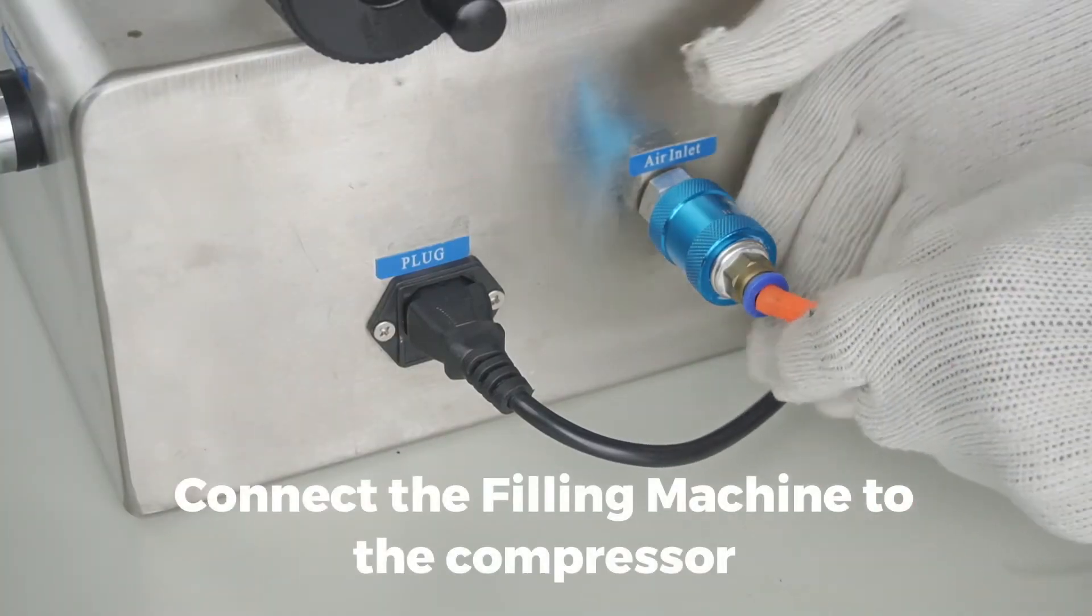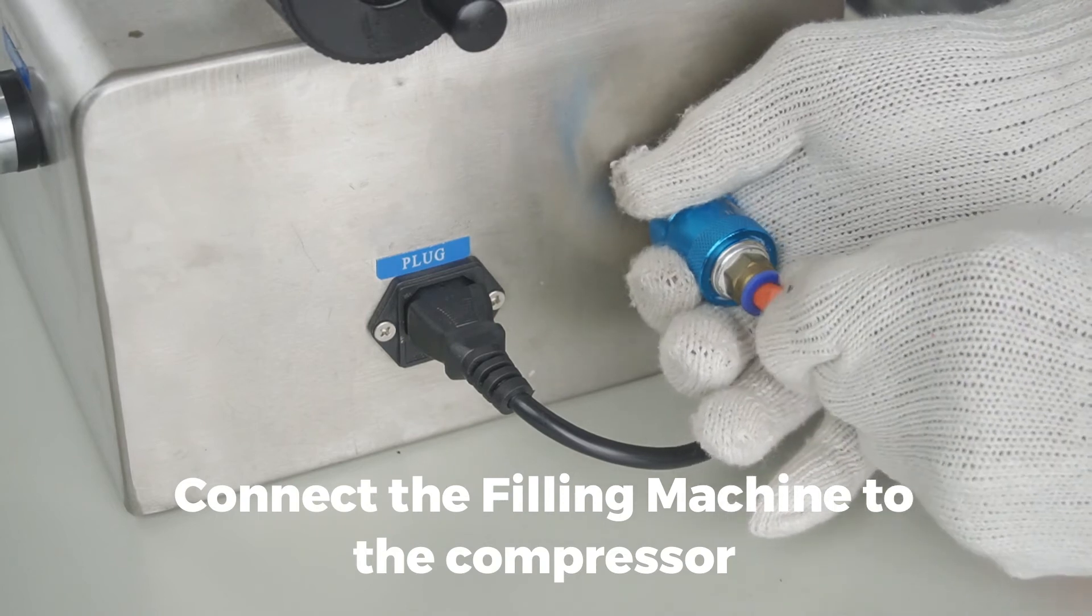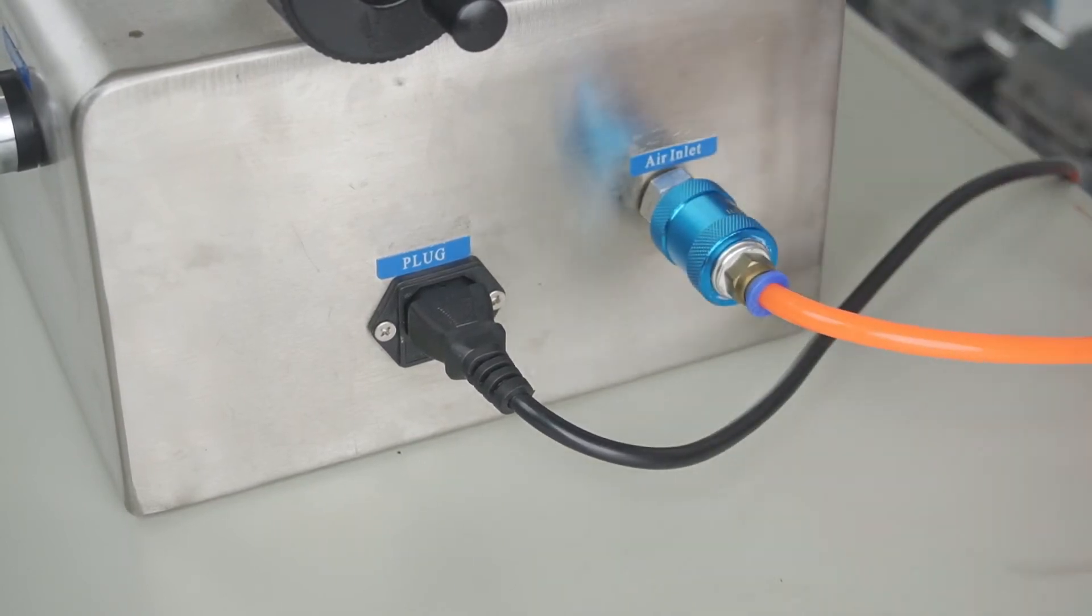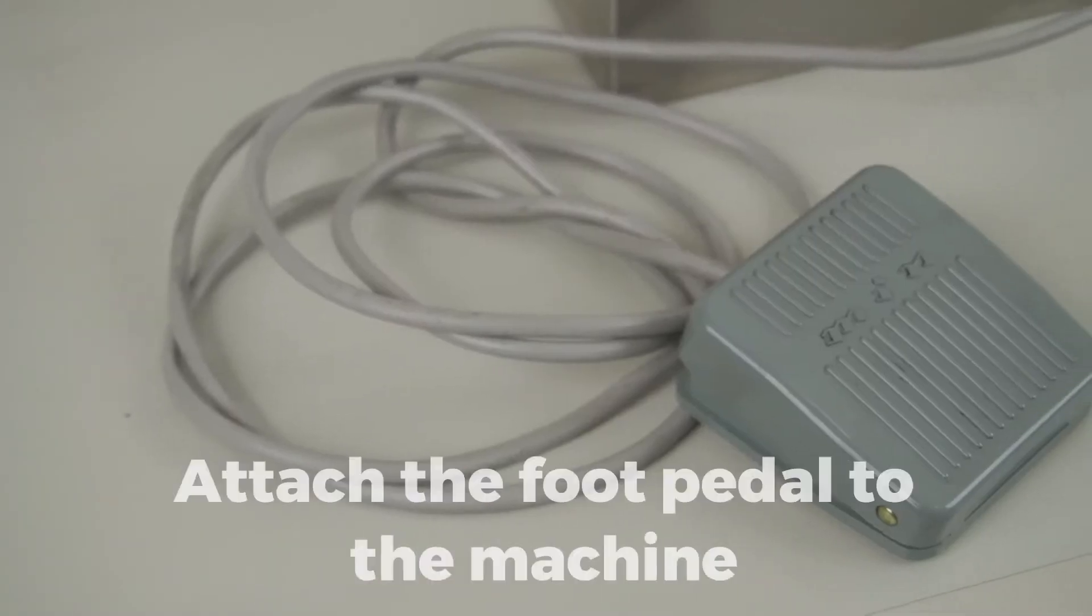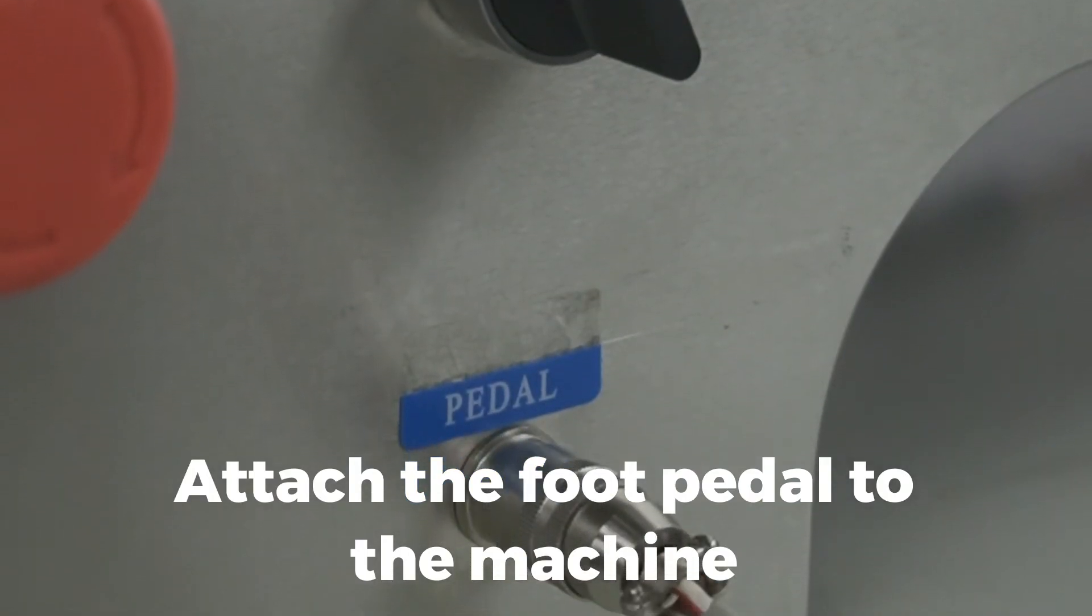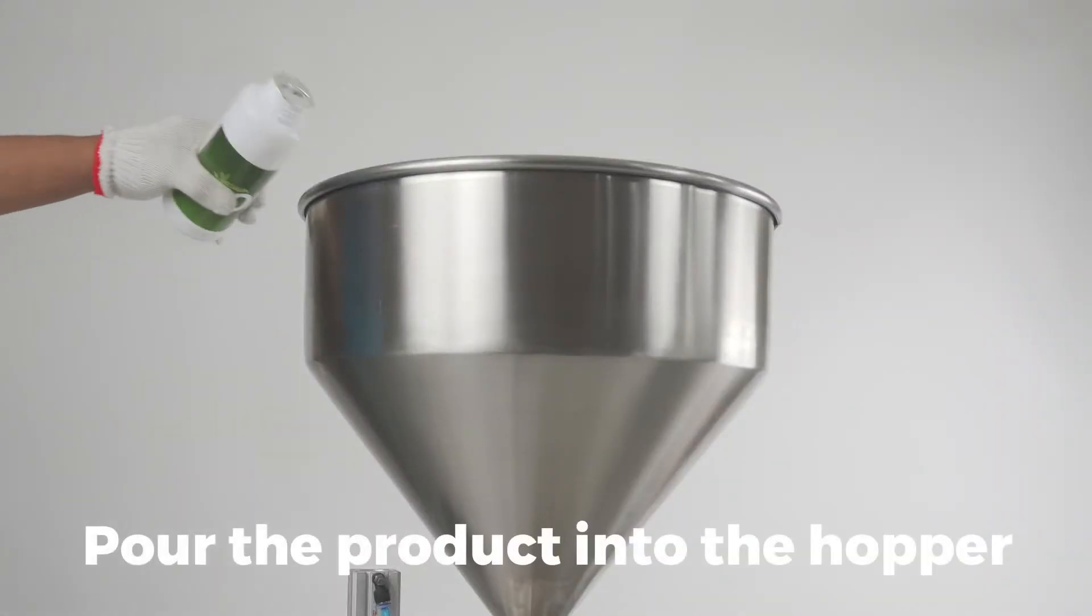Connect the filling machine to the compressor. Attach the foot pedal to the machine. Pour the product into the hopper.